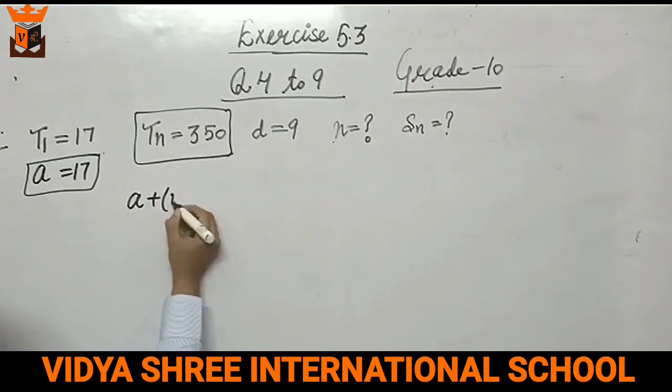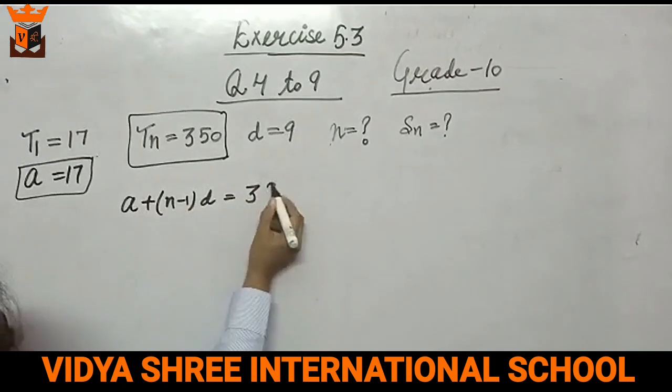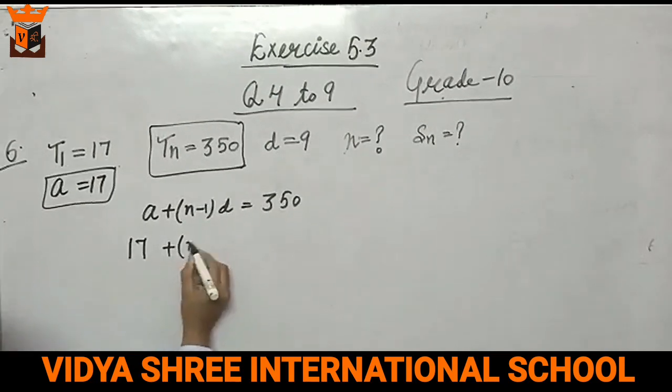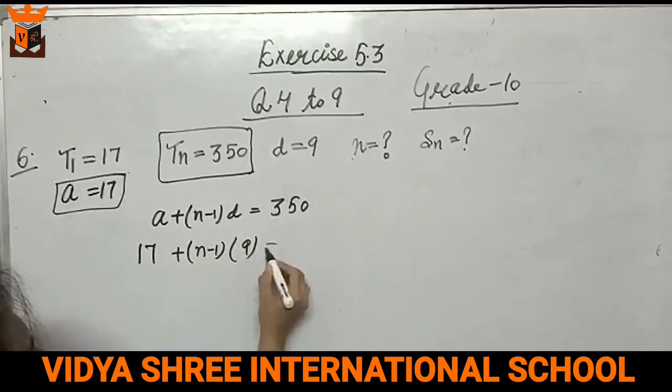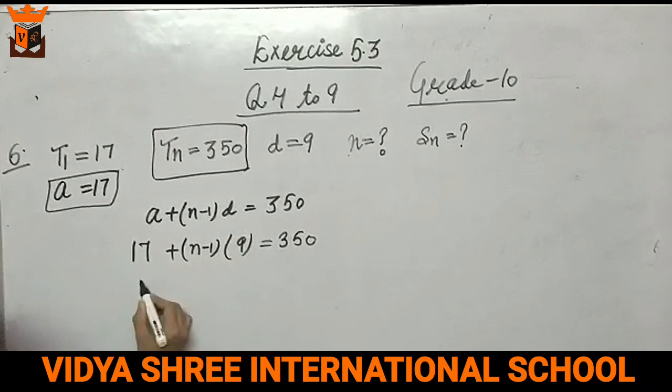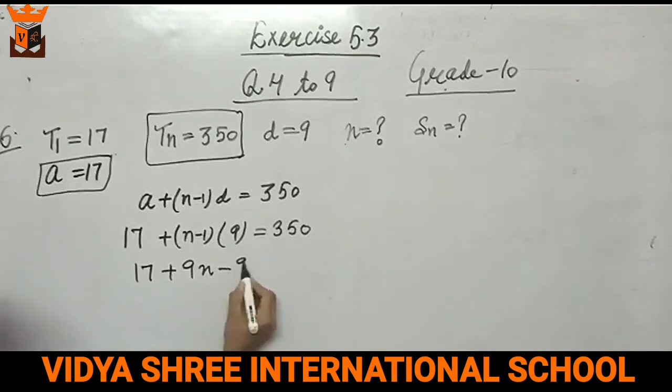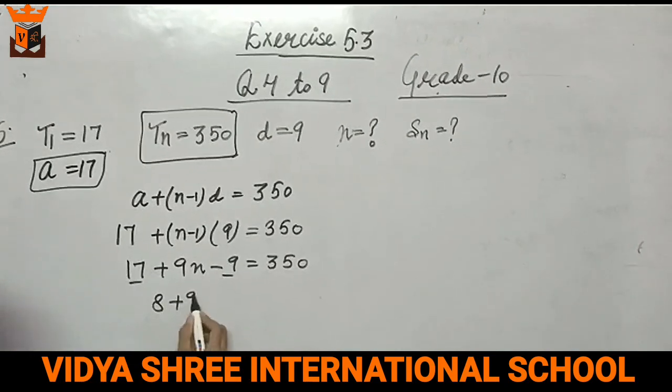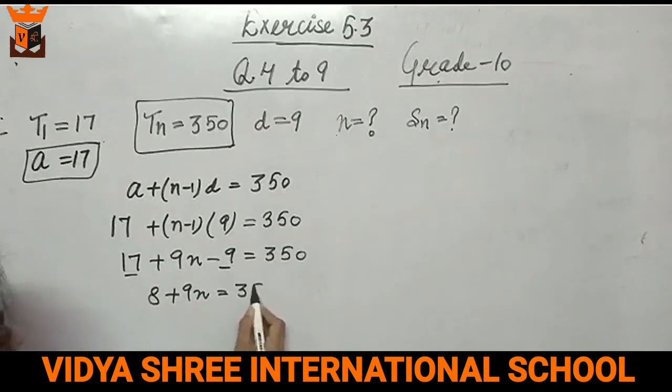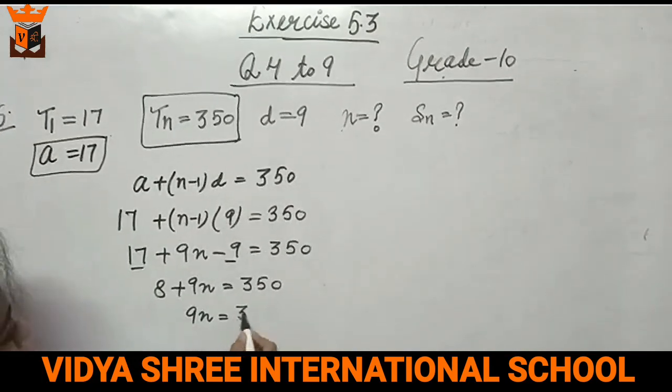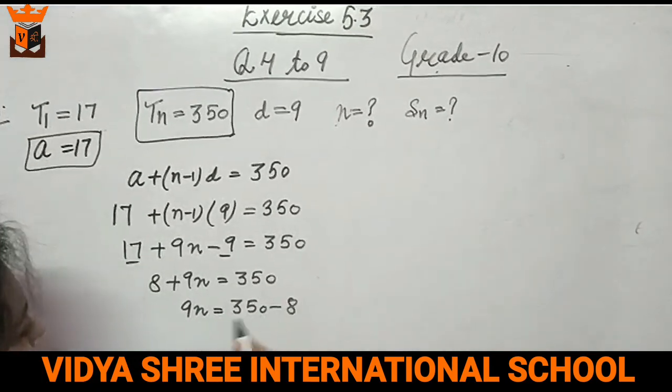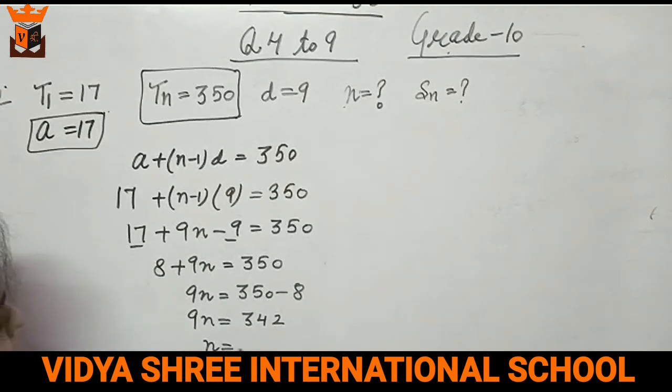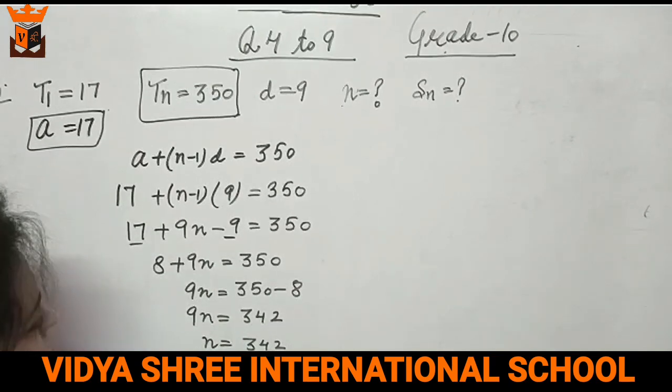We are given tn. So what is the formula? a plus (n minus 1) into d. This is 350. What is a? a is 17. n minus 1, what is d? d is 9. This is 350. 17 plus 9n minus 9 equals 350. 17 minus 9 is 8 plus 9n equals 350. 9n equals 350 minus 8. So 9n equals 342. So what is n? 342 by 9.